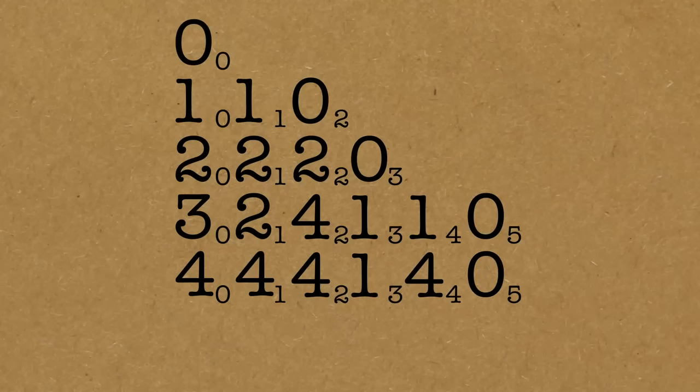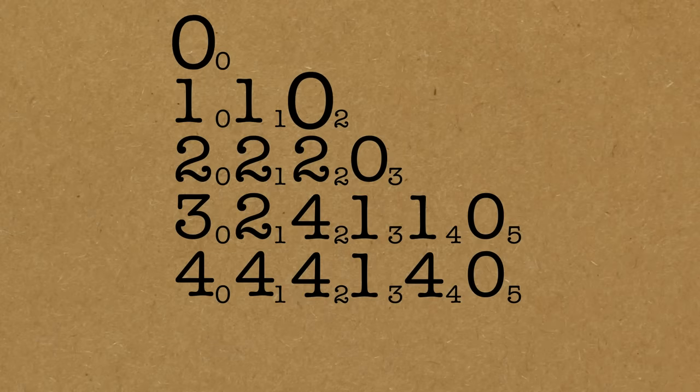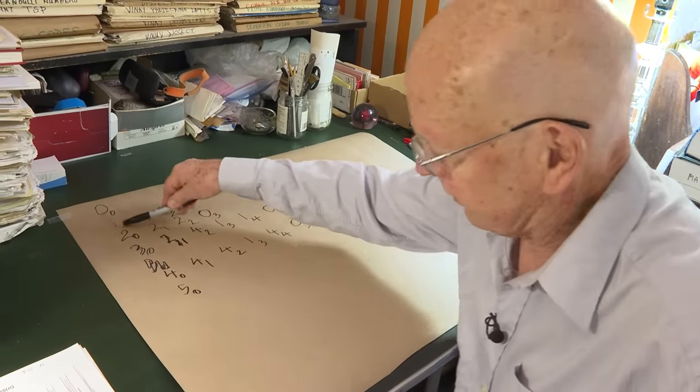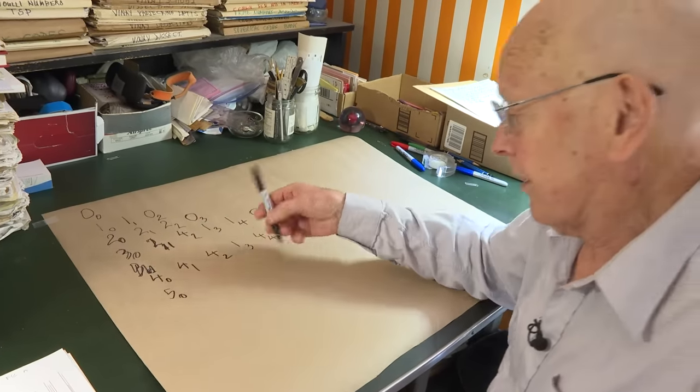The next line, it always starts with n because each row gives us a zero. Now we have one, two, three, four, five zeros. So the first entry of each row is zero, one, two, three, four, five, six, and so on.